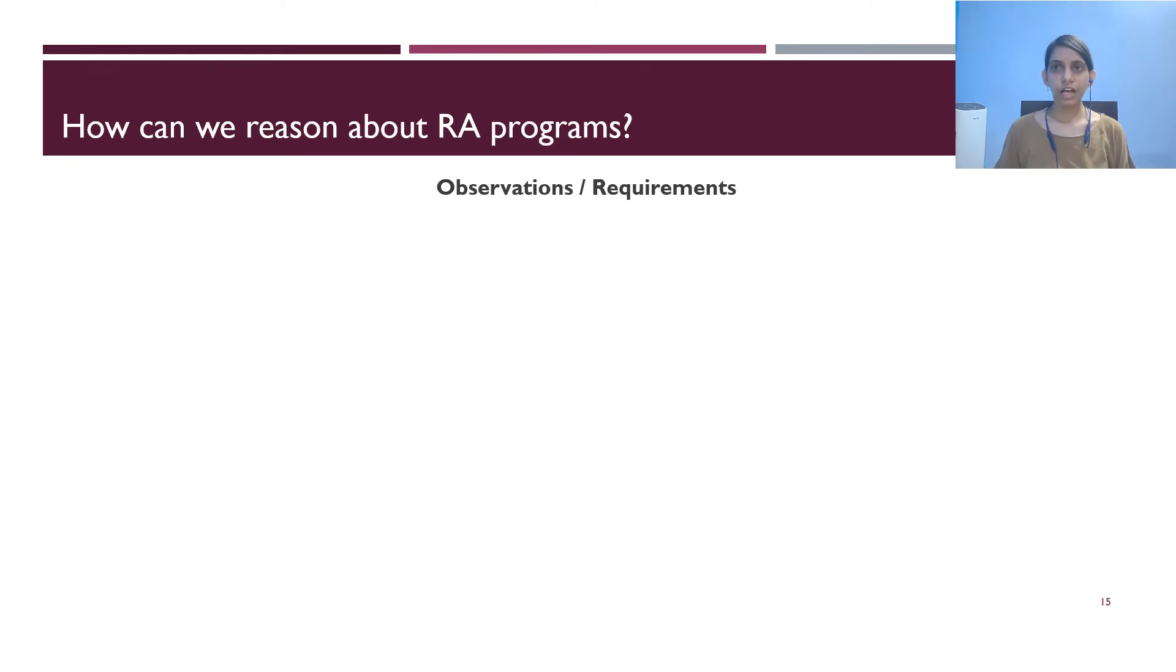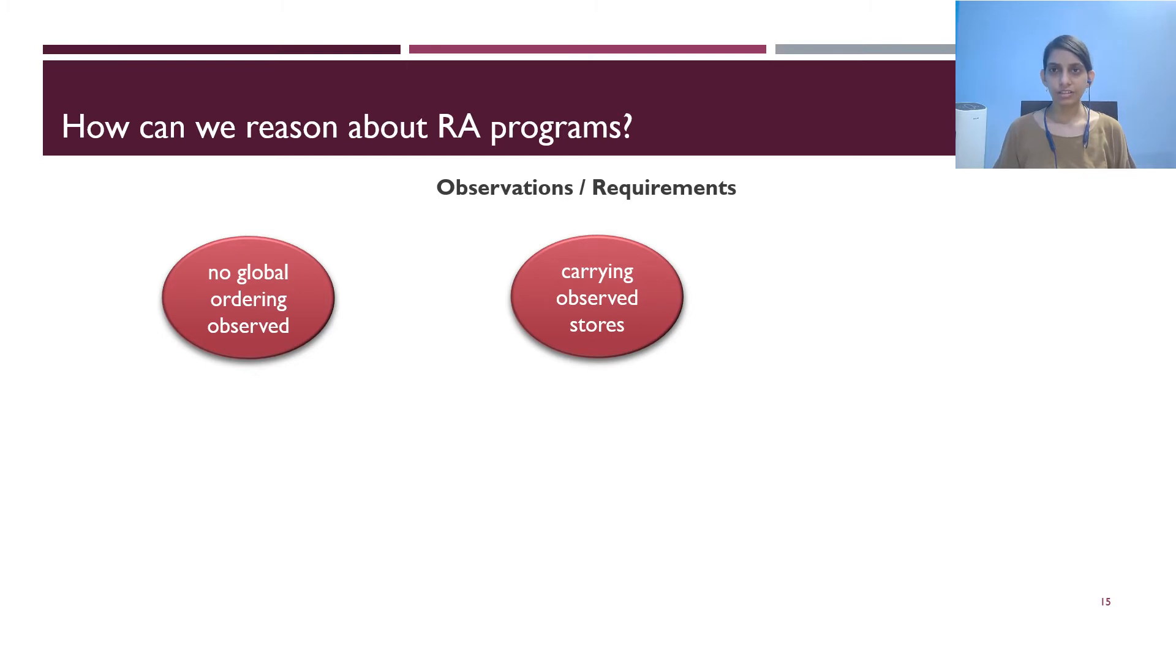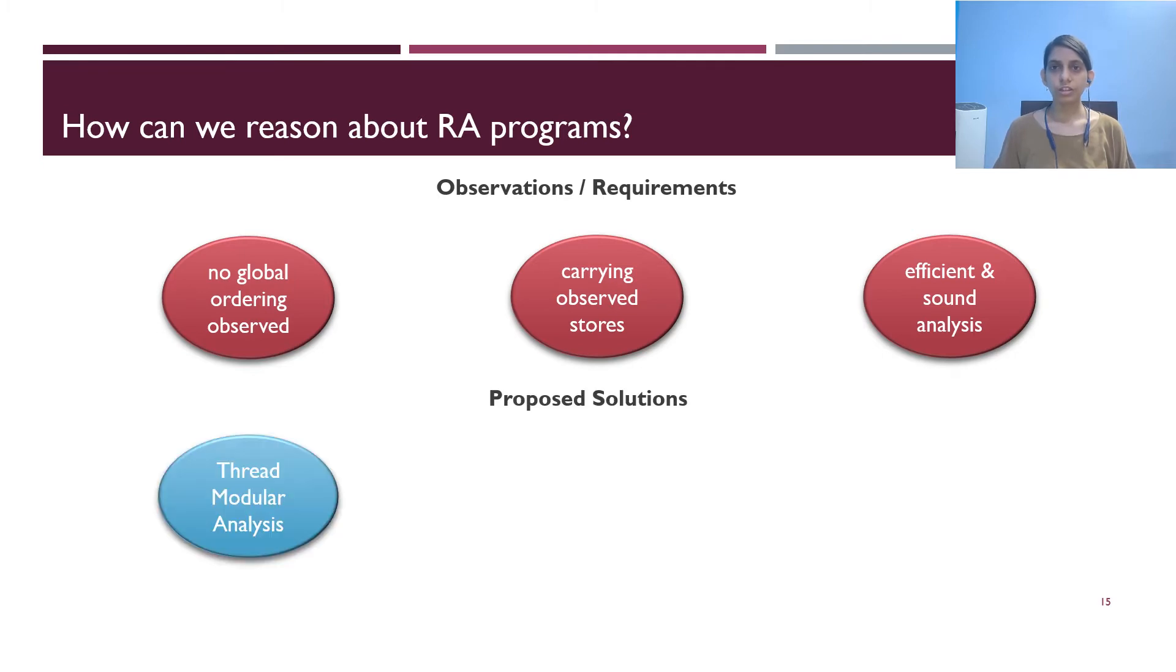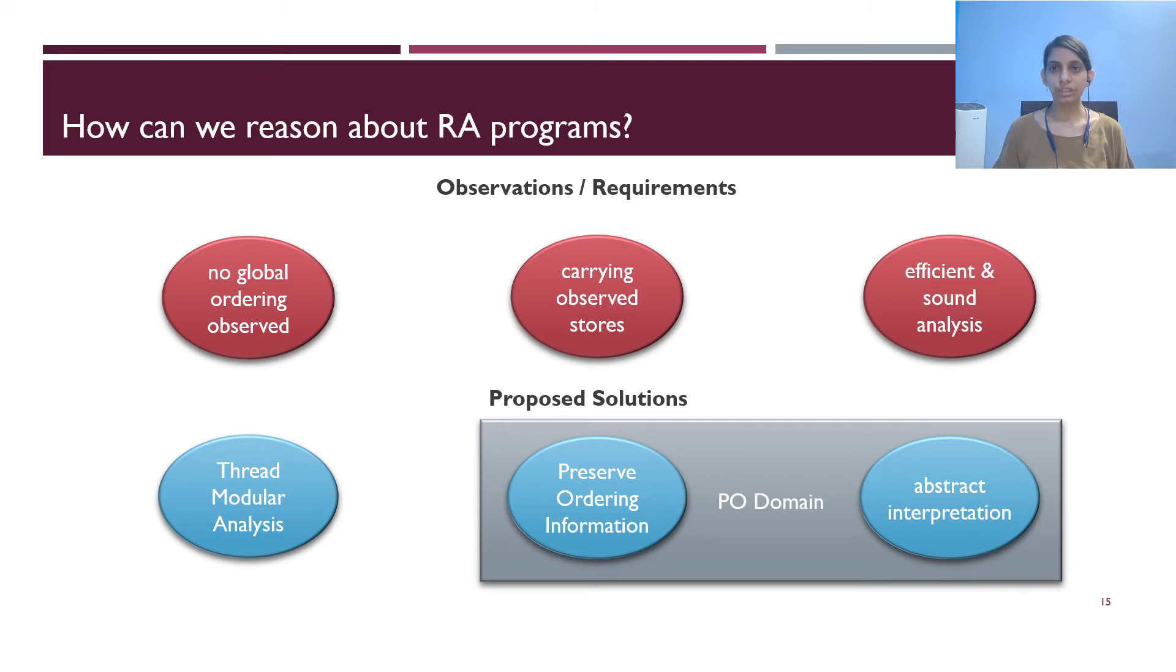While designing a technique for the RA memory model, we need to consider the following. Threads do not observe a global ordering as we saw with IRIW example. RF relation carries available information from store to load and we want the analysis to be efficient and sound. Keeping in mind these observations, we propose to first use thread modular analysis to perform thread local reasoning. This allows us to maintain information over different threads separately. Second, we propose to keep the ordering information in the program state and carry it from the store to the load along the RF edges. The third problem is solved using abstraction for efficient and sound analysis. Our central contribution PO domain allows us to keep the ordering information and perform abstractions and refinements over it.